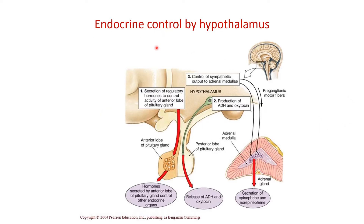Remember, we said that there is a relation between the endocrine system and the hypothalamus. The hypothalamus controls the endocrine system, and the endocrine system controls other glands, and thus the two systems work in a coordinated manner — both the endocrine and the nervous system — to regulate many of our body functions. Here we have the three ways by which the nervous system or the hypothalamus controls the activity of our endocrine glands.